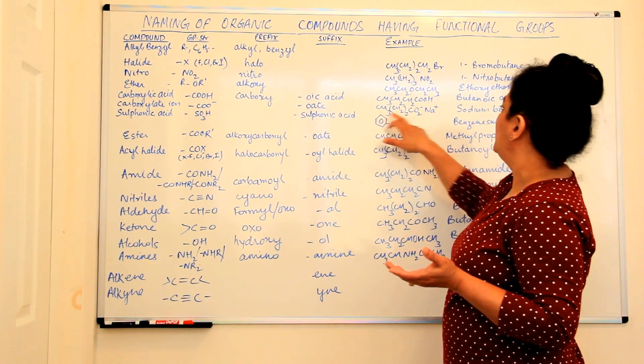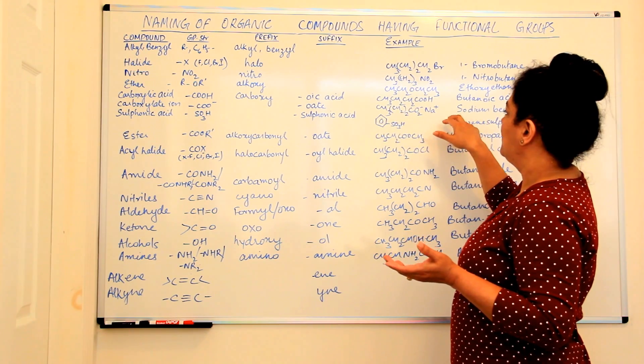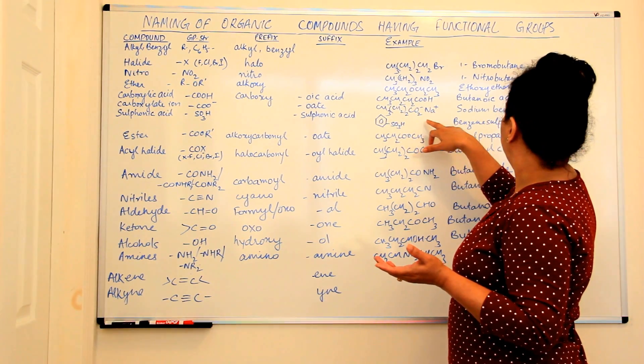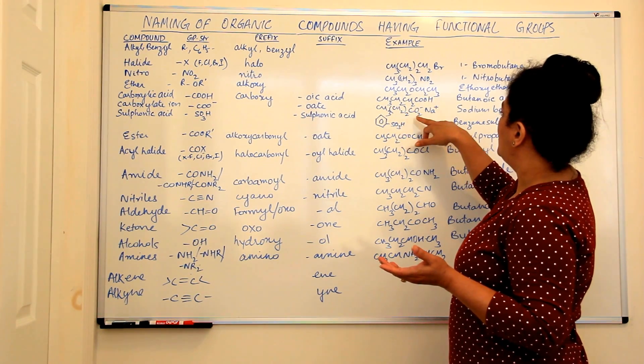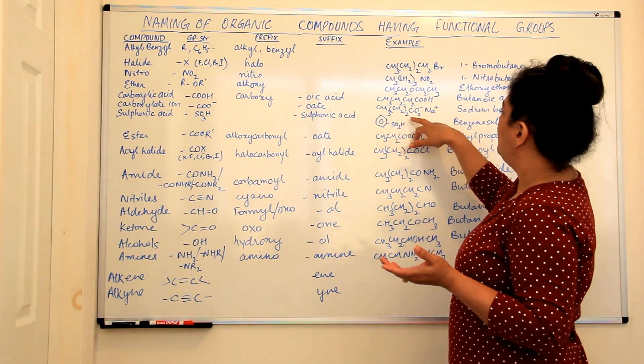So, for example, you have sodium benzoate. Okay, this is not benzene. So this is sodium butanoate.